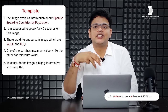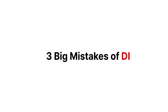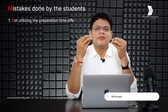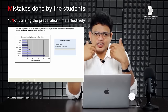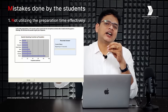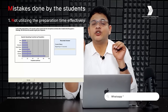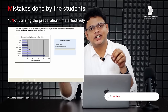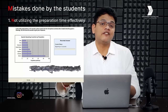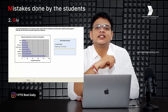You can use the same template for three to four questions you get in the test. Now let's understand the big mistakes students make in Describe Image. Number one mistake is not utilizing the preparation time effectively. Before recording starts, you have 25 seconds. If you are not practicing the title and keywords during that time, you are simply wasting the preparation time, and you will not have fluency while giving your answer.